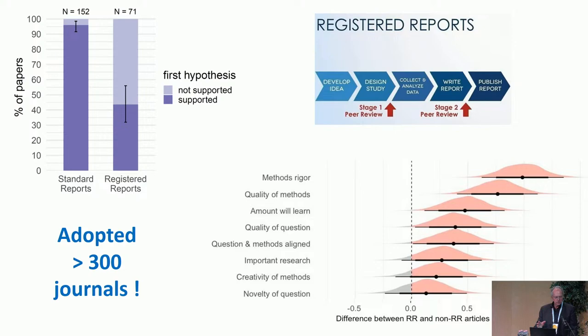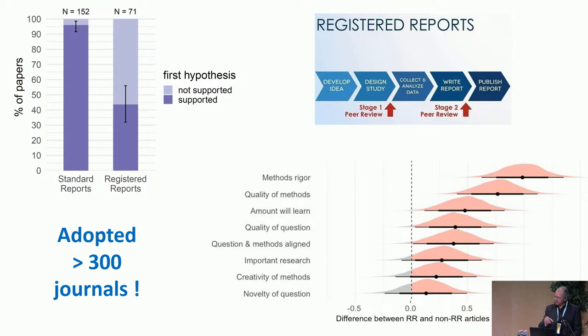The registered report is still in the early phase of adoption — a little more than 300 journals are now using it. The idea is brilliant: two-stage peer review. When you have a grant, ethics permission, and you're about to start data collection, you stop and first write the introduction and methods section of your article. You send that to a journal, which can judge relevance from the introduction and methodological quality from the methods. On that basis, they decide to publish your paper or not — the editors and reviewers are not distracted by your findings because there are no findings yet.